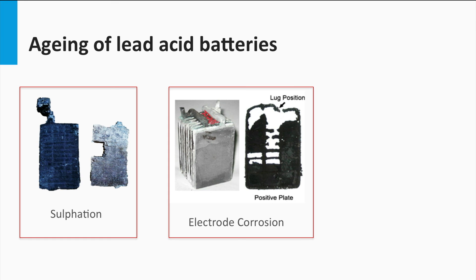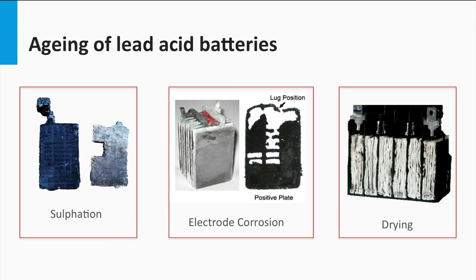Corrosion of lead grid at the electrode is another common aging mechanism. This leads to increased grid resistance due to high positive potentials. Another cause is the drying out of electrolyte. Gassing can occur at high charging voltages resulting in loss of water. This should be replaced by timely addition of distilled water. Otherwise it dries out and the battery no longer functions.